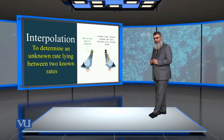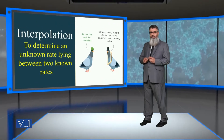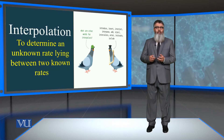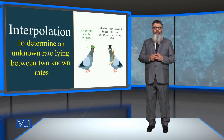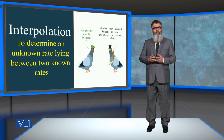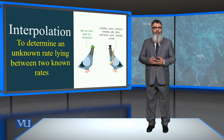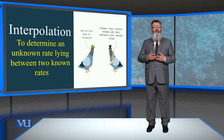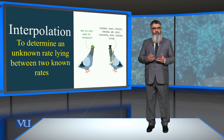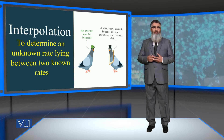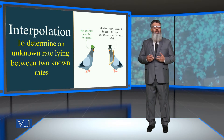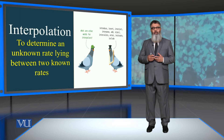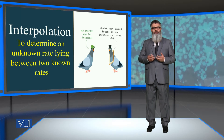We have discussed that the internal rate of return is the actual rate of return earned by the project for the investor. To determine that internal rate of return, we have to apply various rates of return one after the other, and that is called a hit and trial method. If we apply the rate of return to the present values,